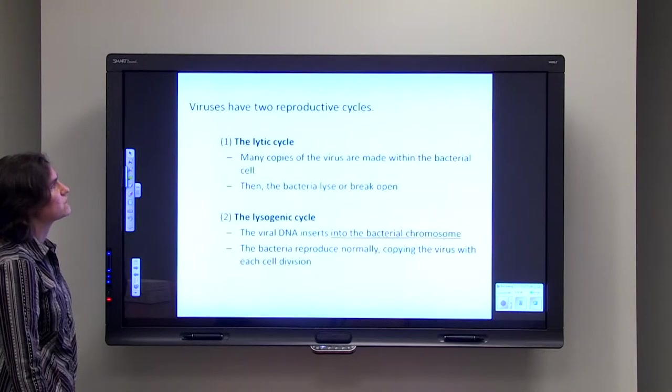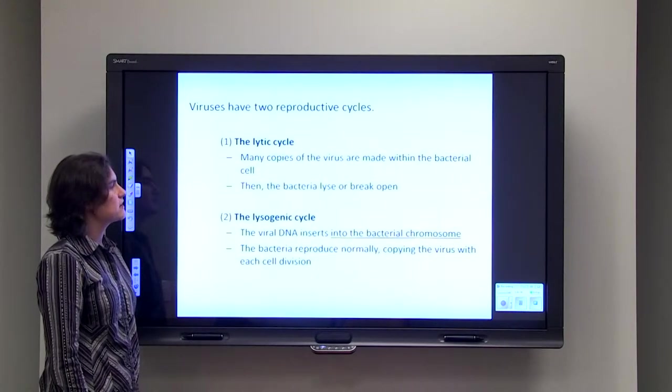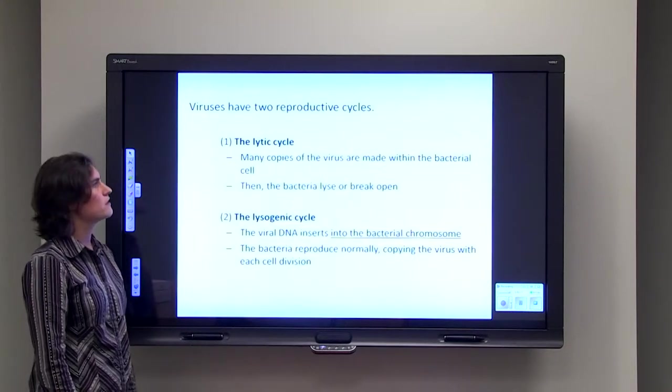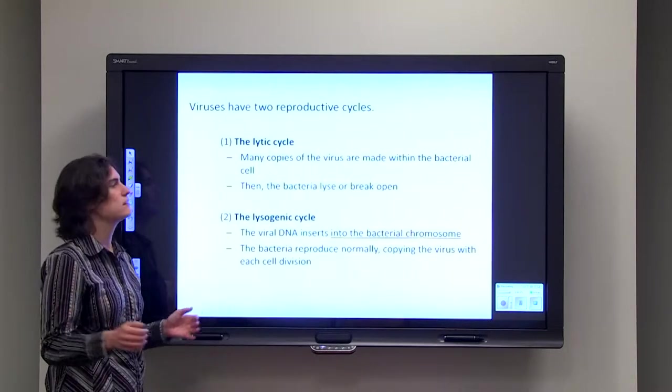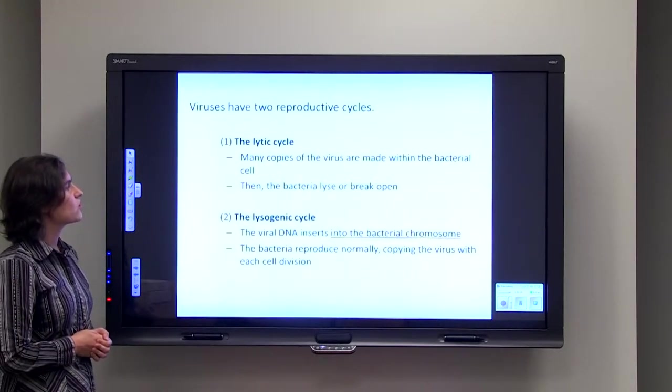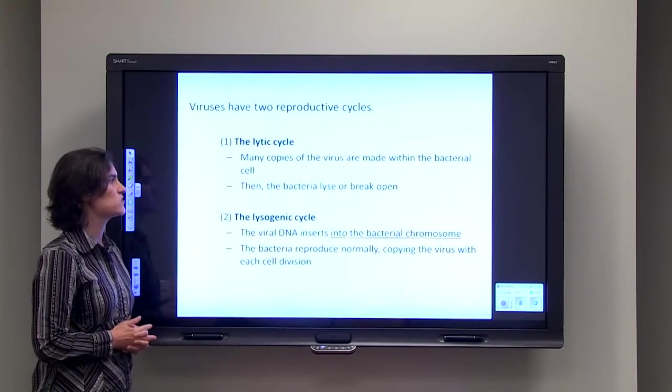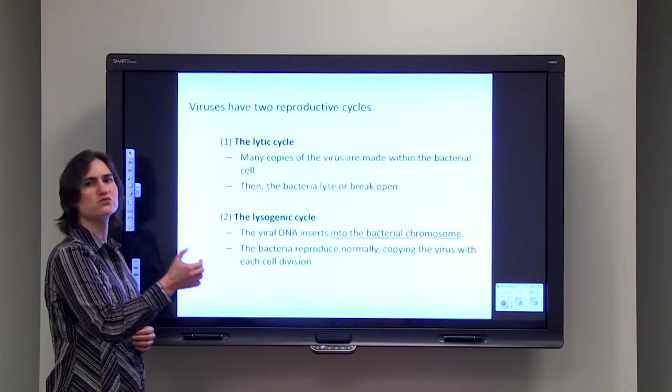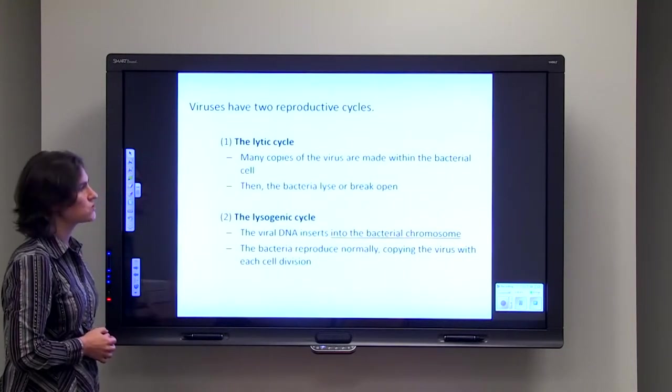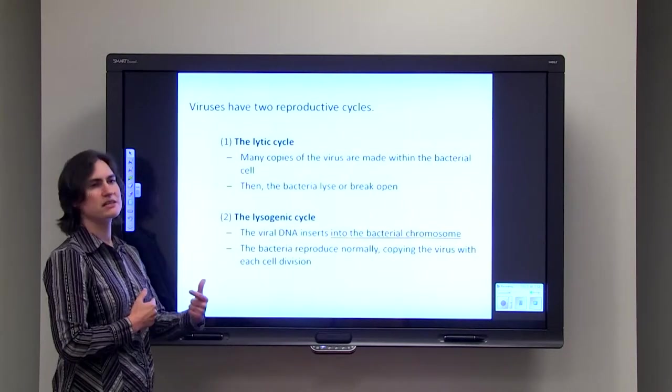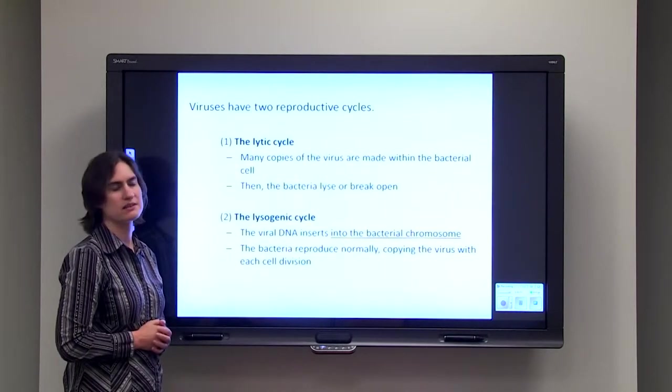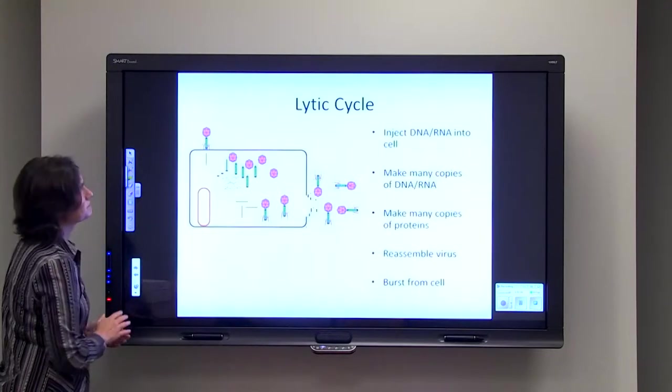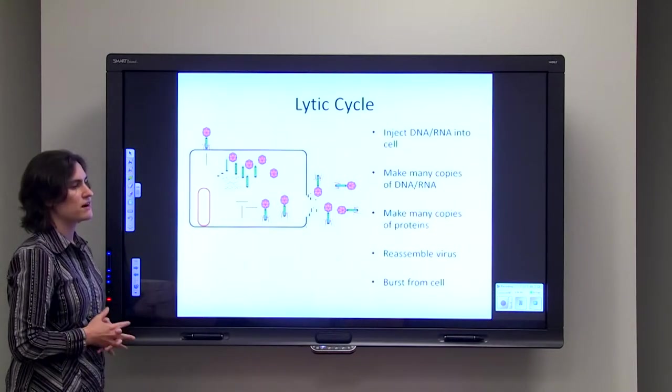Now viruses have two reproductive cycles: the lytic cycle or the lysogenic cycle. With the lytic cycle, the virus is able to make many copies of itself within a bacteria cell and then the bacteria cell lyses or breaks open. Those viruses that infect bacteria can also have a lysogenic cycle. These occur when the viral DNA inserts itself directly into the bacterial chromosome. Every time that bacteria reproduces itself, it also reproduces the virus. Every time those bacteria cells split again, they also are copying and reproducing that virus with each cell division.